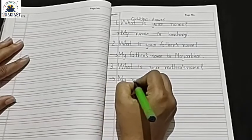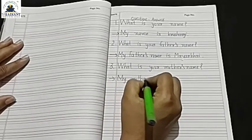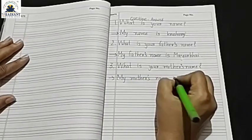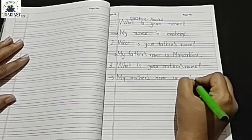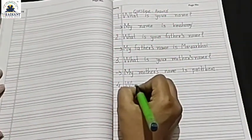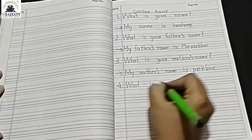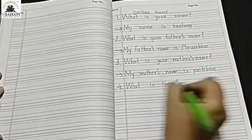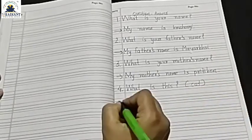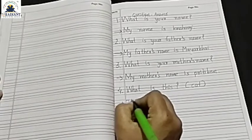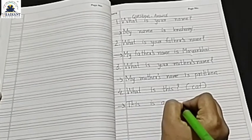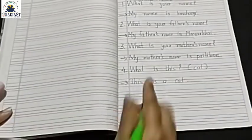So the answer: my mother's name is Preeti. Next, look friends. What is this? This one — count — cat. So cat — I'll say: this is a cat. So the answer is: this is a cat.